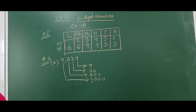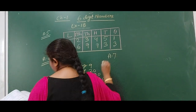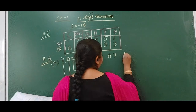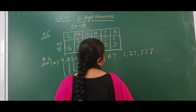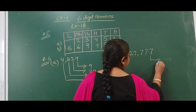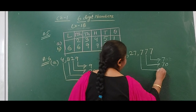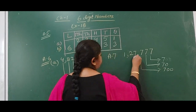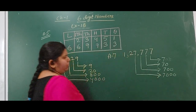Now we come to question number 7: write the place value of all 7s in the number 7,777. For the first 7 it will be 7, for the next 7 it will be 70, for the next 7 it will be 700, and the last 7 will be 7,000. In this way you are supposed to write the answer.